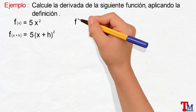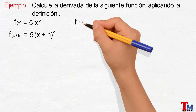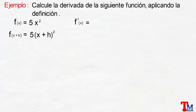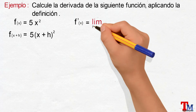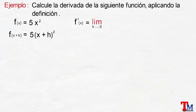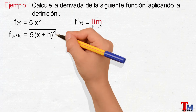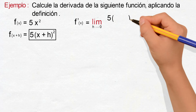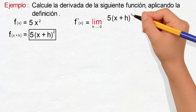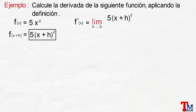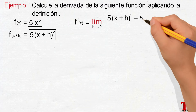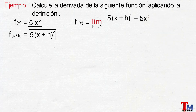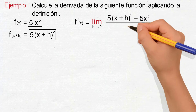Luego, la derivada de la función es igual al límite cuando h tiende a 0, reemplazando f en x más h, nos quedaría 5 que multiplica a x más h elevado al cuadrado, menos, reemplazamos f en x, que nos quedaría 5x elevado al cuadrado, y todo dividido para h.